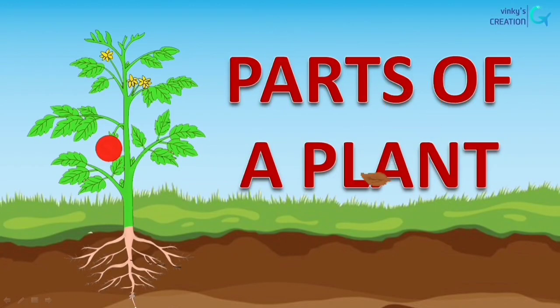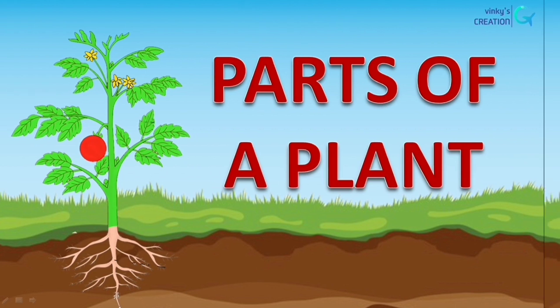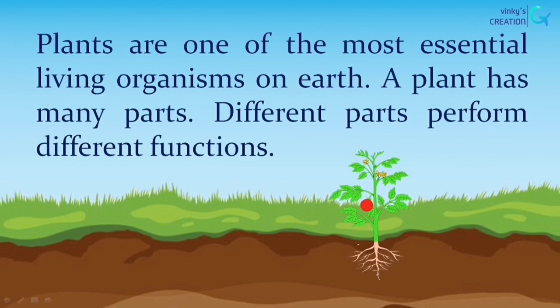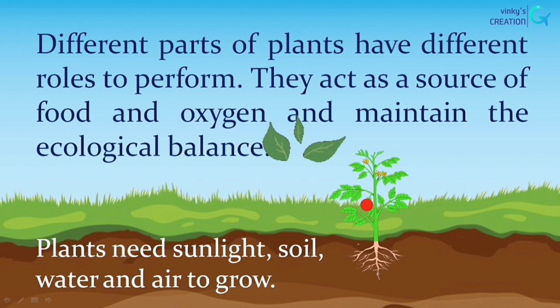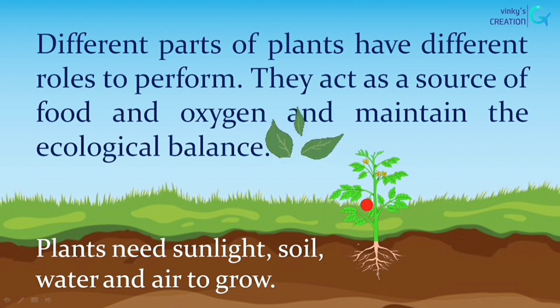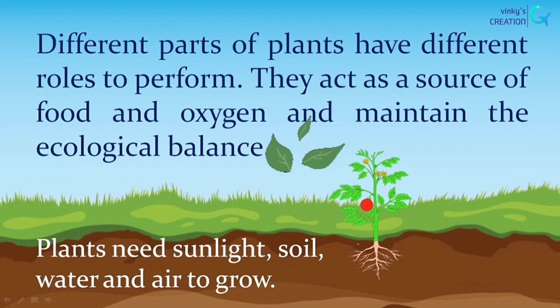Let's learn about the different parts of a plant. Plants are one of the most essential living organisms on earth. A plant has many parts, and different parts perform different functions. Different parts of plants have different roles to perform. They act as a source of food and oxygen and maintain the ecological balance.